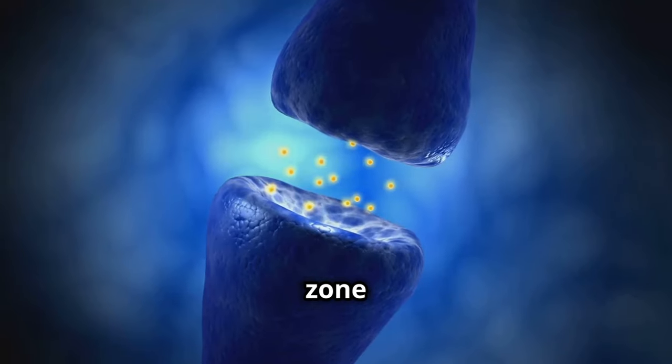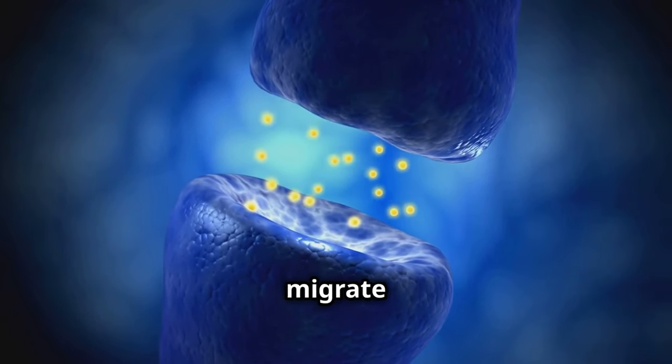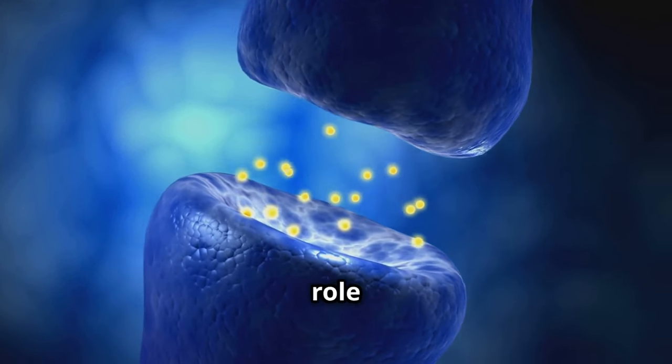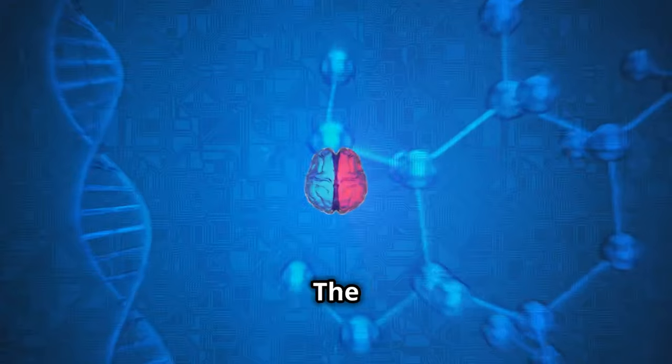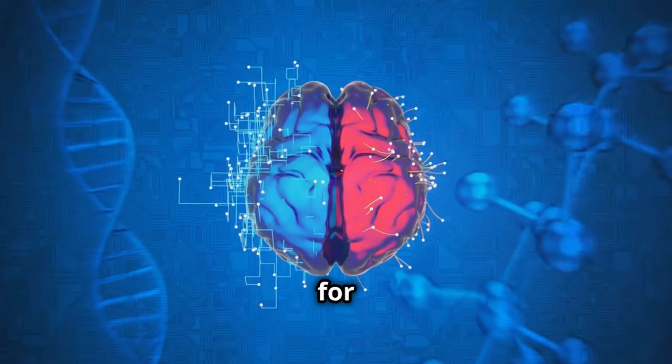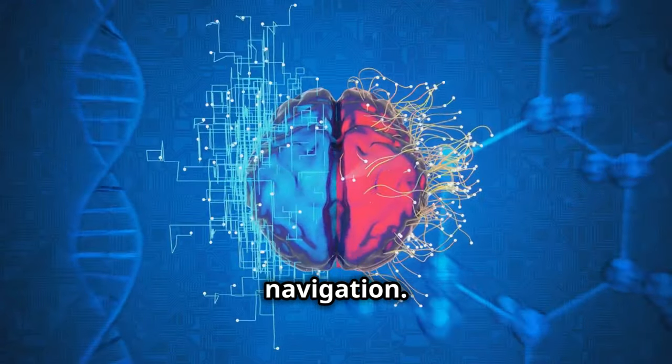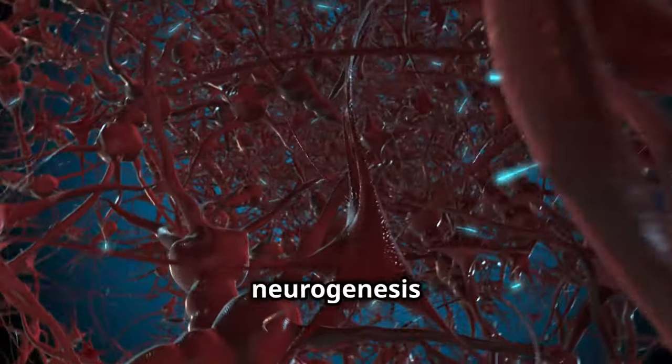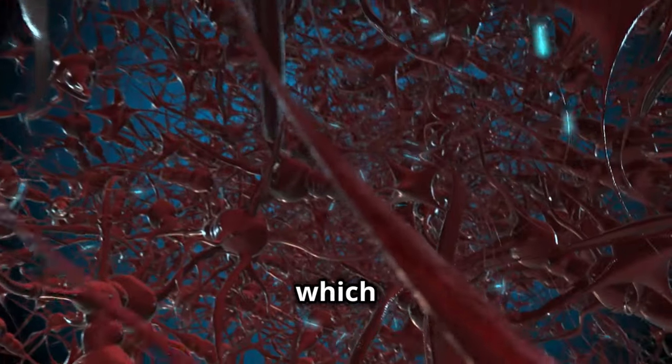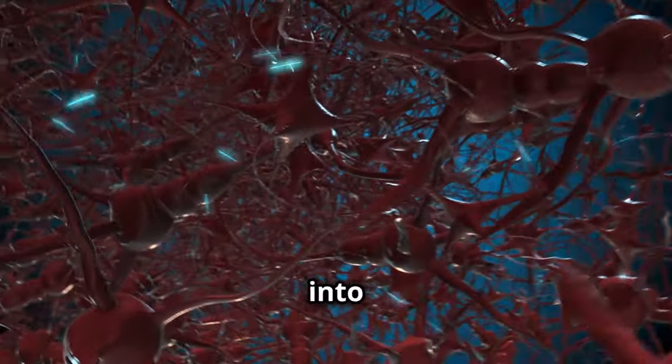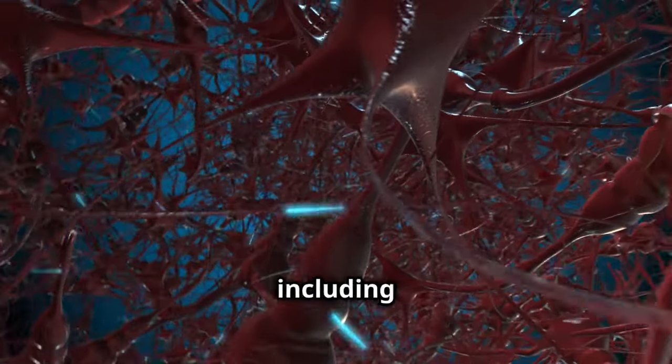The subventricular zone generates new neurons that migrate to the olfactory bulb, which plays a role in our sense of smell. The hippocampus is a key area for learning, memory, and spatial navigation. The process of neurogenesis begins with neural stem cells, which have the potential to differentiate into various types of brain cells, including neurons.